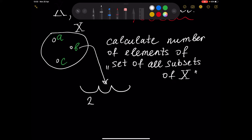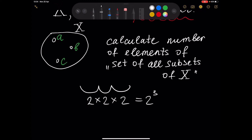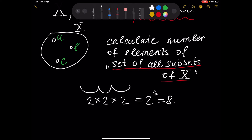Similarly, element B can be present or absent — 1 or 0 — giving two variants. And in the same way, element C can be present or absent. That is why the answer is 2 to the power of 3, or 8 elements. So the set of all subsets of X consists of 8 elements, and we use the notation 2 to the power of X for this reason.